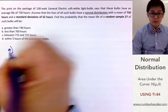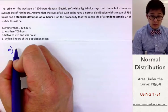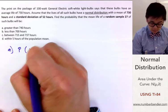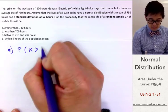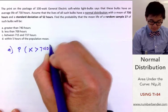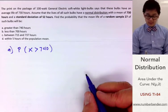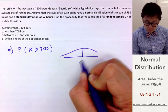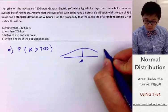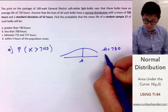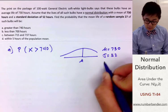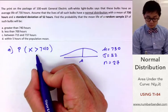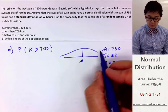To start working on this problem, let's write the proper notation: the probability that the mean lifespan of light bulbs, represented by X-bar, will be greater than 740 hours. To illustrate this on a normal distribution, the mean mu is in the middle — mu is 730, the standard deviation is 52 hours, and the sample size is 27 light bulbs. We're looking for the probability that the average lifespan exceeds 740.